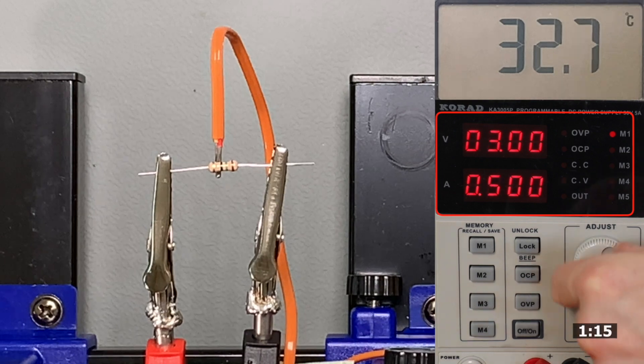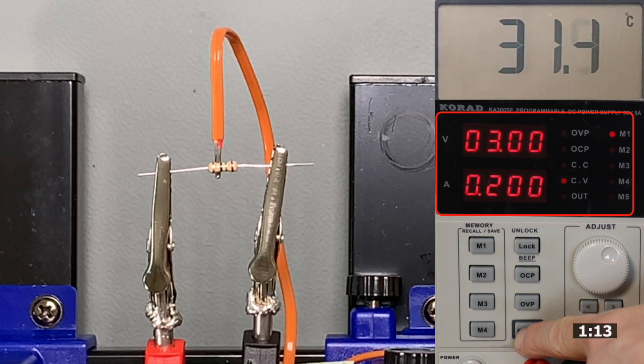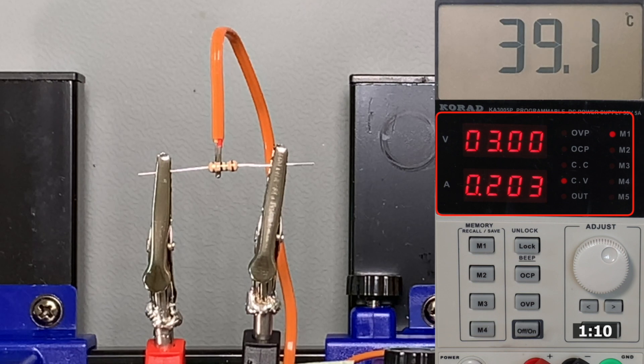At a level of 3 volts the current rises to 200 milliamps and the power therefore amounts to 0.6 watts now, more than double the maximum value. After a few seconds we can see that the temperature has already risen to almost 50 degrees centigrade.